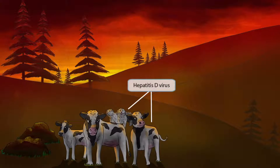This scene will take place out in the country with some dogs herding cows. Notice that the cows have liver spots on them, which should make you think of hepatitis. The dogs should make you think of the letter D. So putting these two ideas together should help you remember that this image is all about hepatitis D virus.